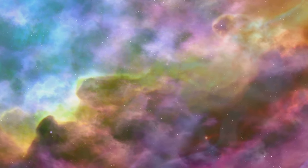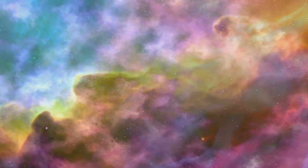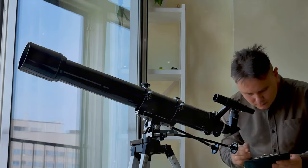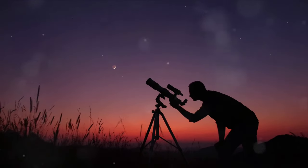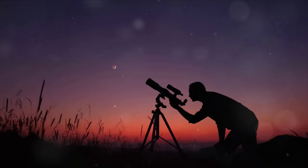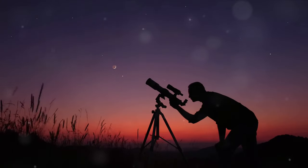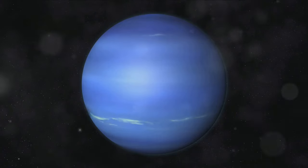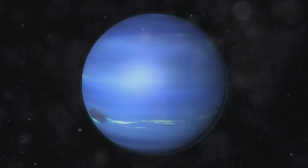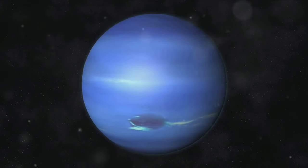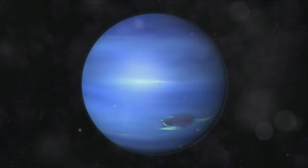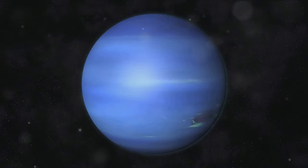But Neptune's allure extends beyond its stunning color. Let's step back in time to the year 1846. A man named Johann Galle, an astronomer from Germany, was about to make a discovery that would forever change our understanding of the cosmos. On a night like any other, Galle identified a tiny point of light in the night sky, a point of light that we now know as Neptune. This discovery sparked a fascination with Neptune that continues to this day.